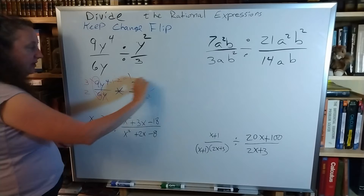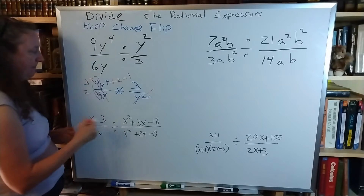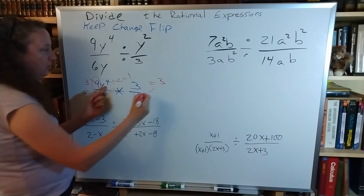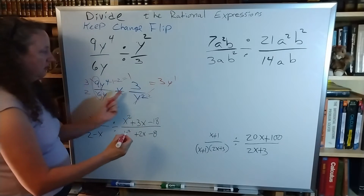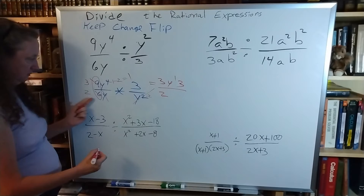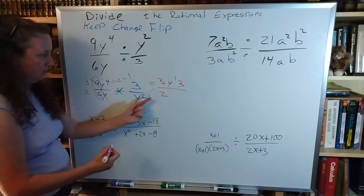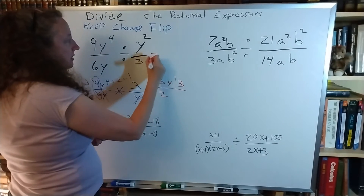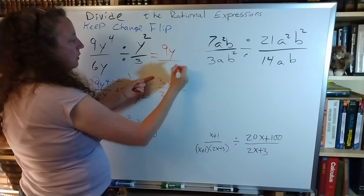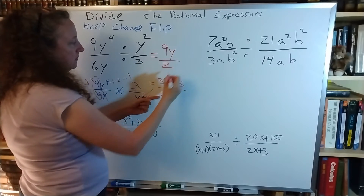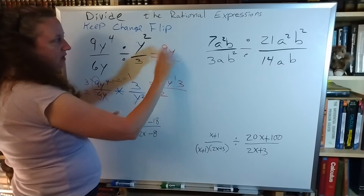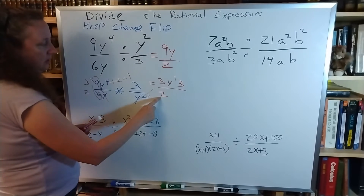Now I'm going to multiply on the top and multiply on the bottom. So I have 3 times y to the 1 times 3. I have 3 over 2, canceled, canceled, just 2. So my answer is 9y over 2 — the 3 times 3 makes the 9, the y to the 1 (don't need to write the 1), and the 2 on the bottom.